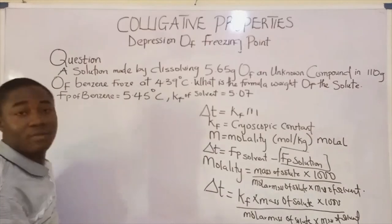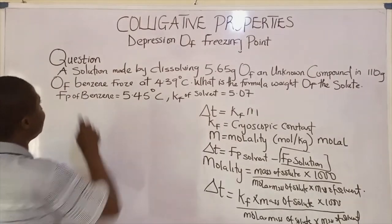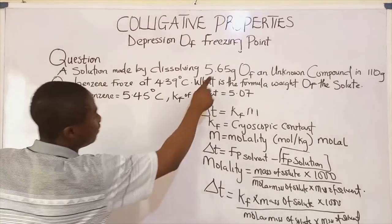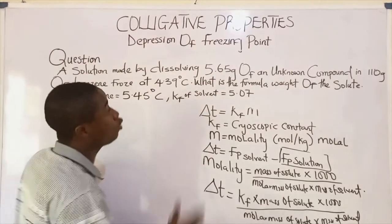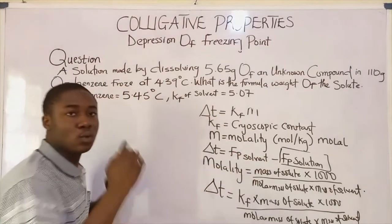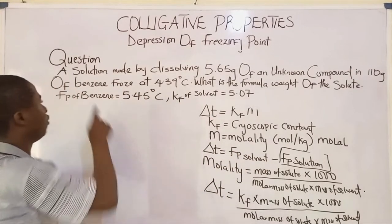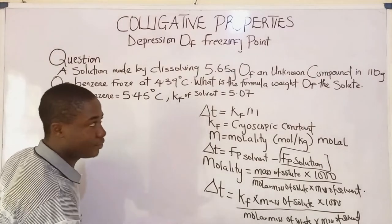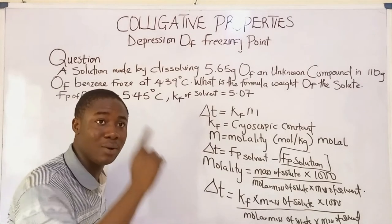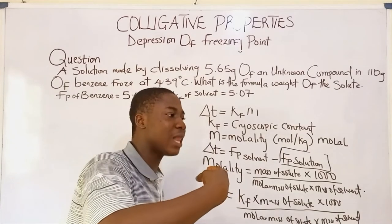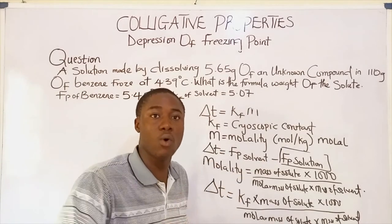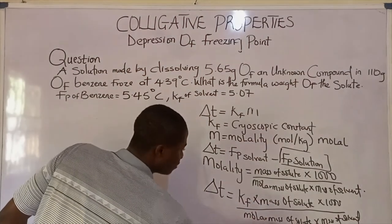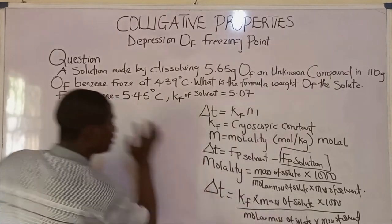Let's move over to the second question. A solution made by dissolving 5.65 grams of an unknown compound in 110 grams of benzene freezes at 4.39 degrees Celsius. What is the formula weight of the solute? Formula weight means the molecular mass or molar mass of the solute. Since we need molar mass, we use the expanded formula.